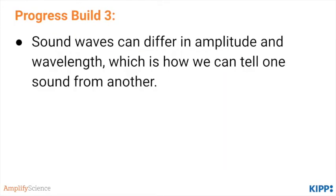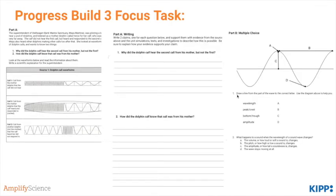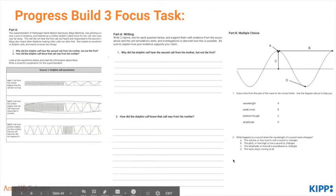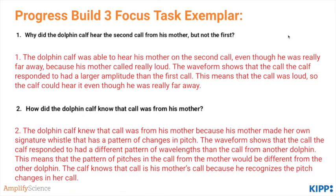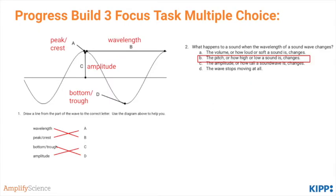By this point in the unit, students should understand progress build three: sound waves can differ in amplitude and wavelength, which is how we can tell one sound from another. In the third focus task, the superintendent of the Marine Sanctuary has waveforms for students to examine and explain why the dolphin calf responded to one particular call and not the other two. Go ahead and take a few minutes to complete this focus task, then compare your answer and note how each uses a claim, evidence, and reasoning to explain each situation. Then check the multiple choice answers.